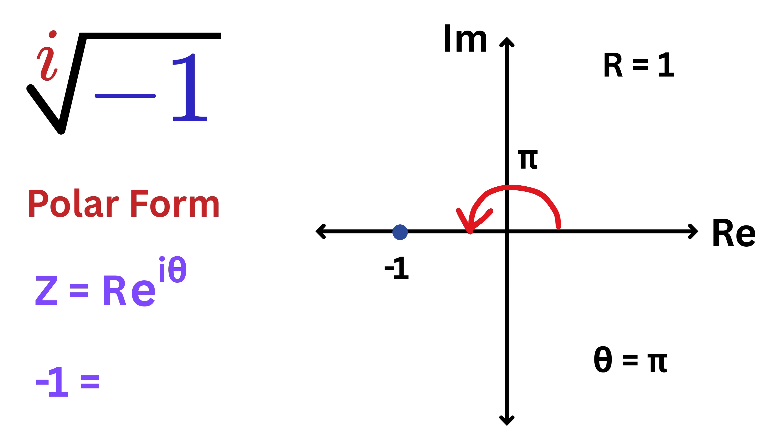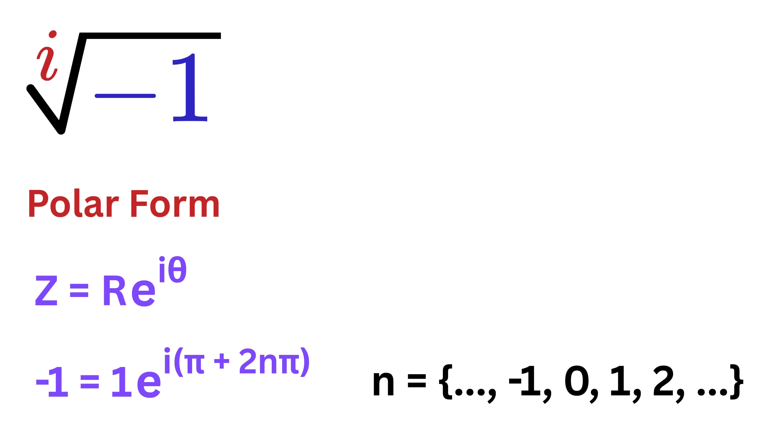So, we can now write negative one as one times e raised to i times pi. But wait, what if we rotate another full circle? That's an extra two pi, and we reach the same point again. In fact, we can keep adding or subtracting entire rotations or multiples of two pi, and we will still land on the same negative one. That means we can represent negative one more completely as e raised to i times pi plus two n pi, where n can be any integer like zero, one, two, negative one, and so on.